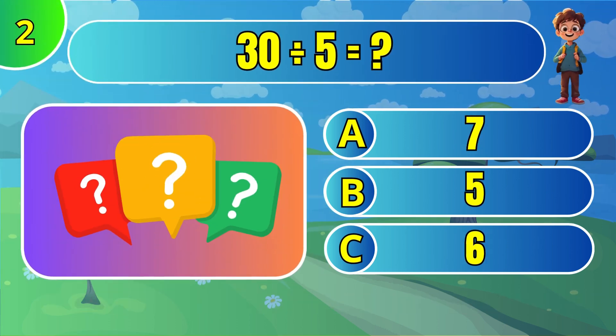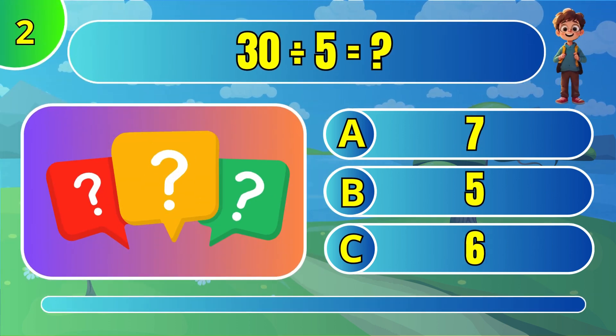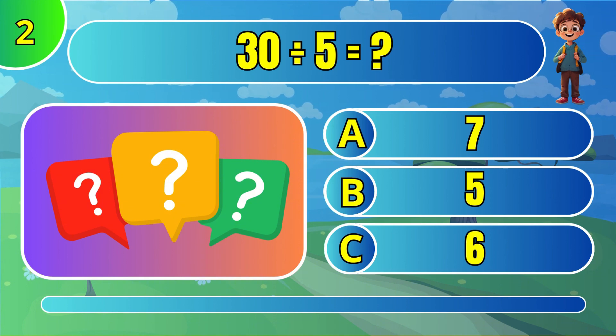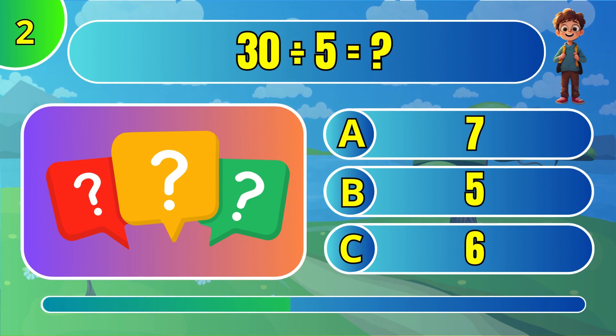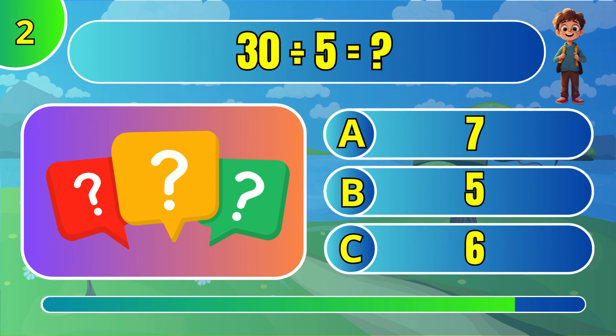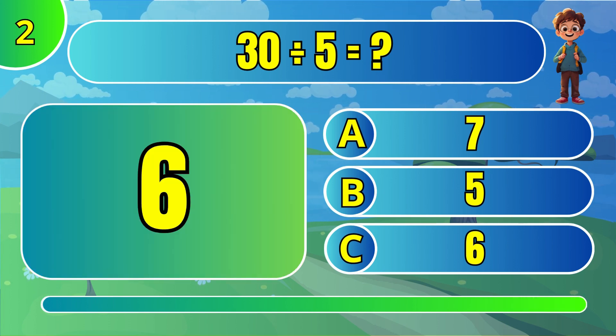What is 30 divided by 5? The answer is C: 6.